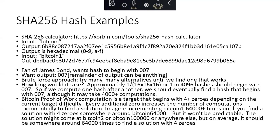Bitcoin proof-of-work is essentially using hashing to do something similar to this 007 brute force example. Bitcoin proof-of-work is looking for a hash output target that begins with four or more zeros, and the exact number of zeros is based on the current target difficulty. Every additional zero increases the number of computations exponentially. For example, finding a hexadecimal output that begins with four zeros would take about 64,000 hashes on average. Going to five, six, or seven zeros increases it even further. We'll be taking a much more detailed look at proof-of-work in a subsequent lecture.